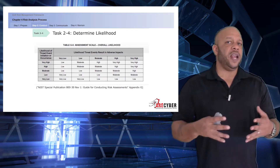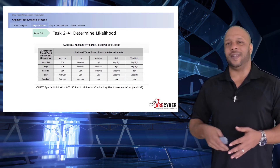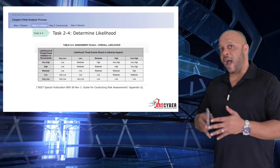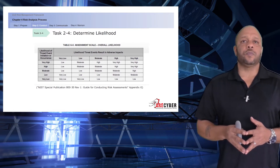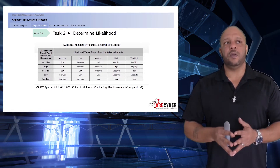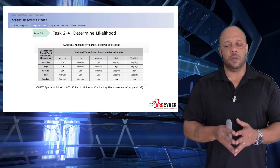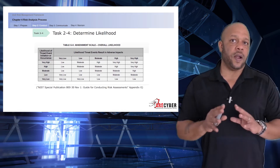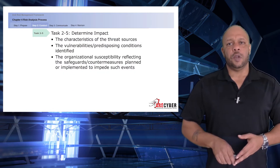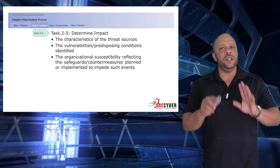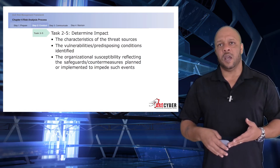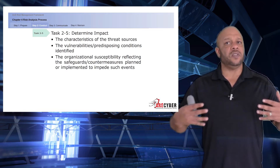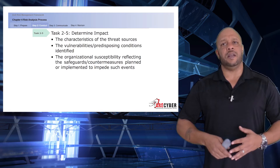To determine the likelihood, we use NIST 830, the guide for conducting risk assessments. You'll see that you have four choices: very low, low, moderate, high, and very high. For each risk or threat, you must identify the likelihood of that threat event against the likelihood that the threat event is going to have an adverse impact. To determine your overall impact, you need to identify the characteristics of the threat sources, the vulnerability conditions identified, and the organizational susceptibility reflecting the safeguards and countermeasures planned or implemented to impede such events.